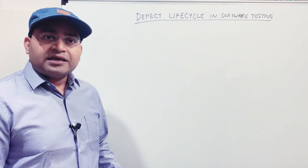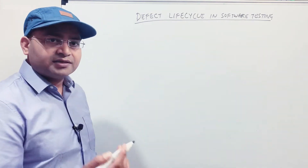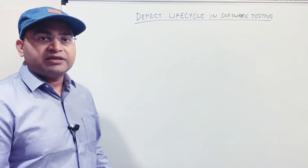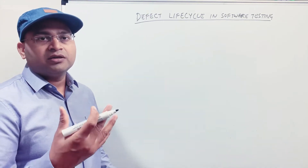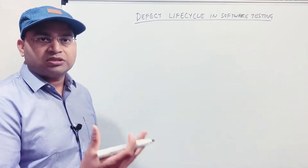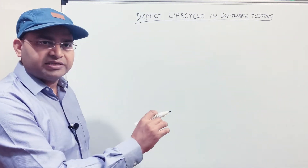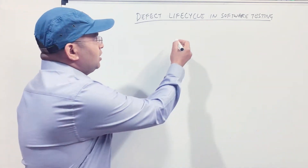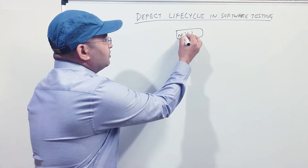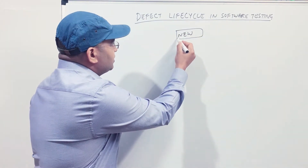Now, how does the defect lifecycle look in software testing? When you find a defect, you raise it by opening the defect management tool, filling in a defect template or form with all the details, and submitting it. Once submitted, the first state of the defect is the New state.